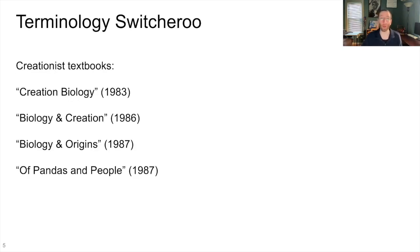So let's first talk about a little terminology switcheroo that happened following that decision. To understand what's going on here, we have to look at a series of creationist textbooks from the 1980s. This is one book that's gone through a bunch of iterations with different titles, but it's the same book. You could think of it as different editions. We have Creation Biology from 1983, Biology and Creation from 1986, Biology and Origins from 1987. And then partway through 1987, they change it again to a book called Of Pandas and People. That was early in 1987, but what happened in the middle of 1987? The Edwards decision.